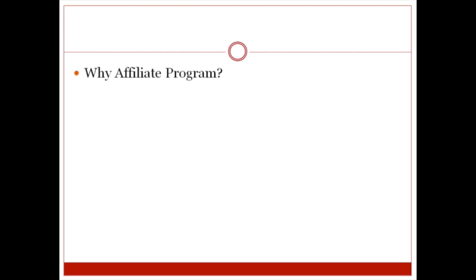Why have an affiliate program? Because you'll make more money. If you're still in the mindset of why, you need to get out of that ego mindset. Even if you give away 50% to somebody else, they are generating income for you and in the end you make more money. Giving higher commissions usually gets more affiliates on board. Giving at least 50% is the standard for intangible products for affiliates to be happy, and affiliates will be happier if your product converts higher.